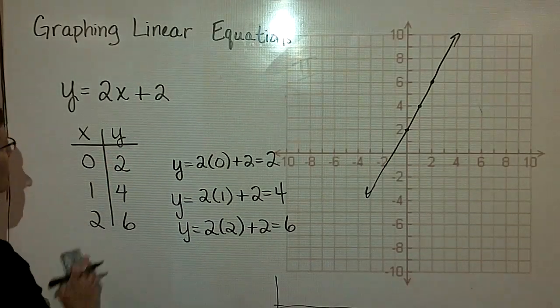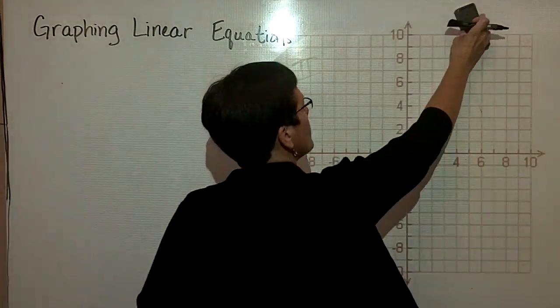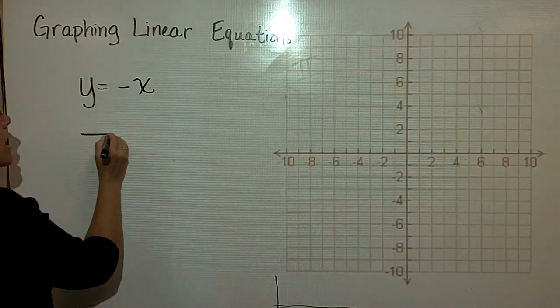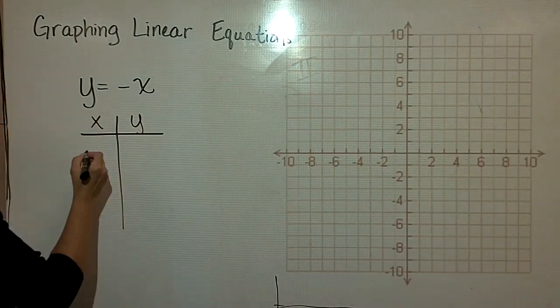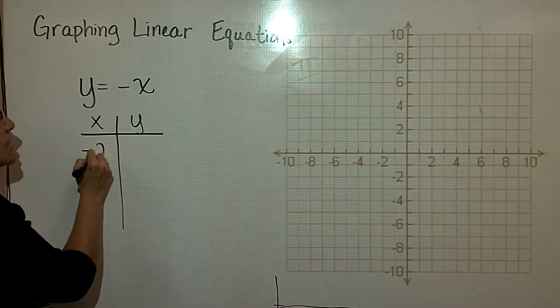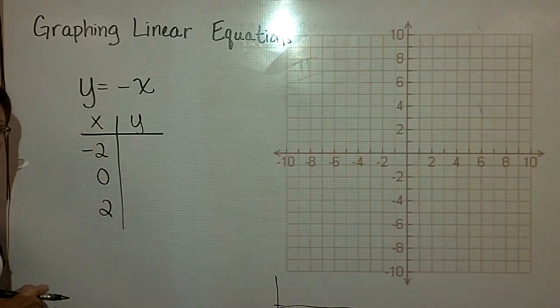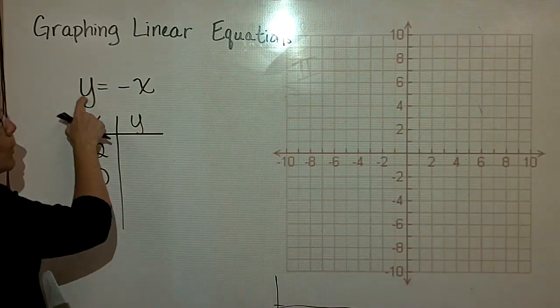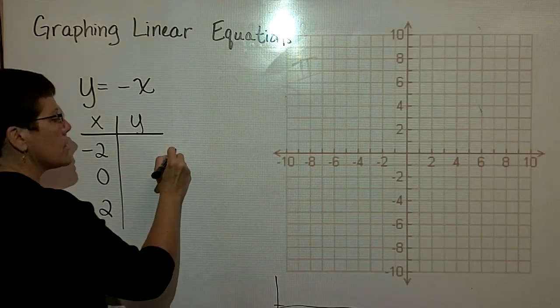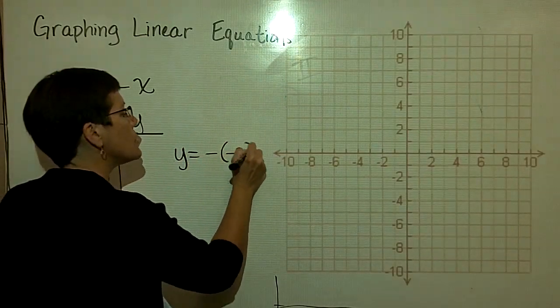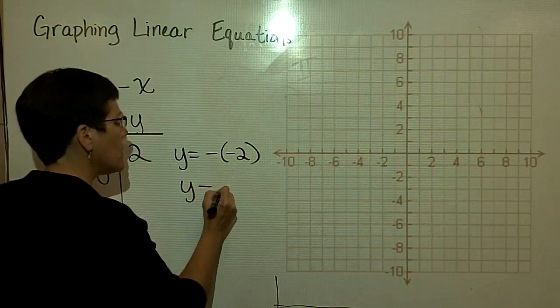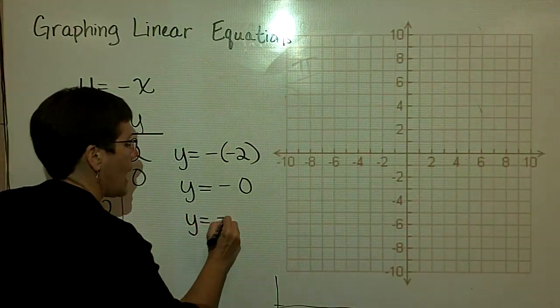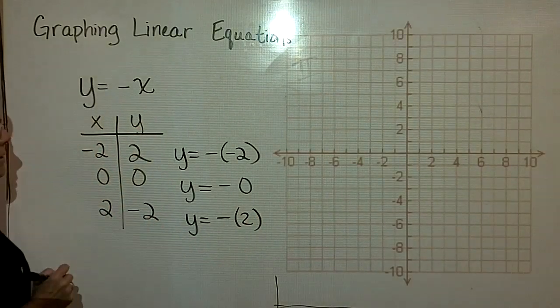Let's do just a few more. Let's try y equals a negative x to graph. This one's kind of interesting. All I have to do is pick values for x. And I'm going to use some different numbers. I'm going to use a negative 2, 0, and 2. And so what I want here is the opposite of whatever x is for y. The opposite of a negative 2 is a positive 2. And the opposite of 0 is 0. 0 never has a sign. And the opposite of 2 is a negative 2.